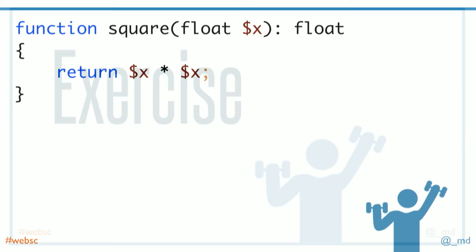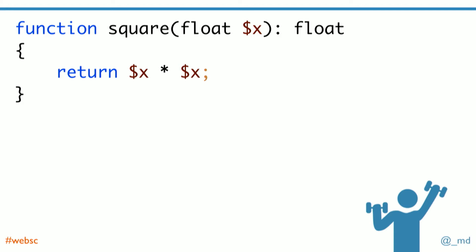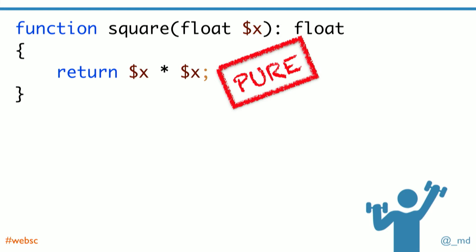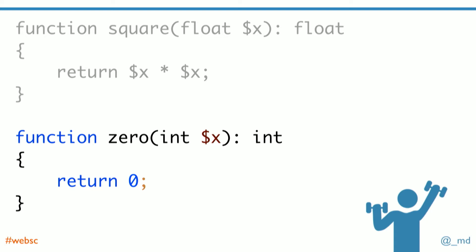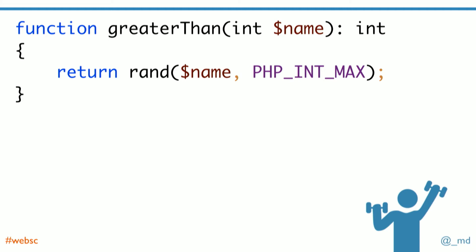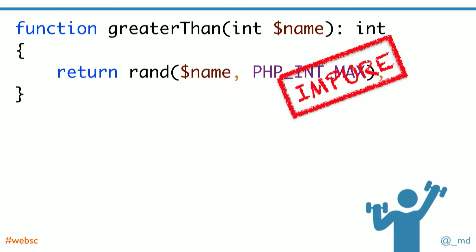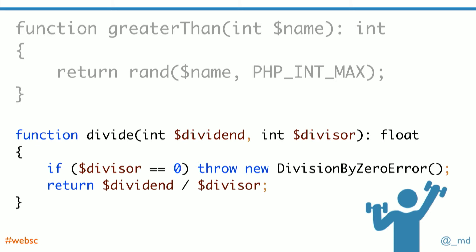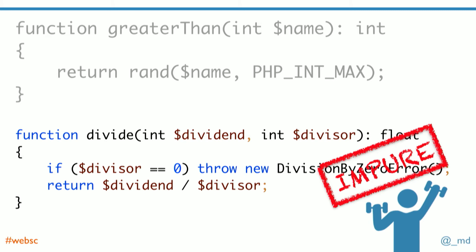Questions: Is this function pure? Yes — always the same result and no side effects. What about this one? Same result always, no side effects — pure. This one? Random — that's a dirty function. What about this one? It throws an exception — that's a side effect. So PHP function features: we've got anonymous functions. This is a function that has no name, and you can pass it to a variable. Don't forget the semicolon at the end.